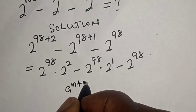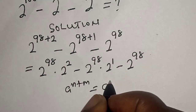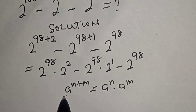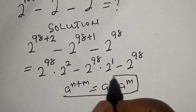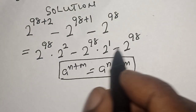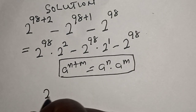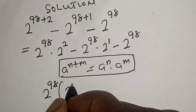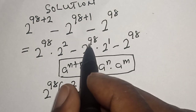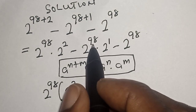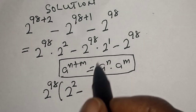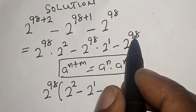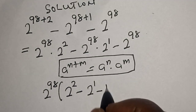Remember this rule: a raised to power n plus m is equal to a raised to power n multiplied by a raised to power m — that is how we got this value. Now 2 raised to power 98 is common throughout, so we factor it out: 2 raised to power 98 times the bracket 2 raised to power 2 minus 2 raised to power 1 minus 1.